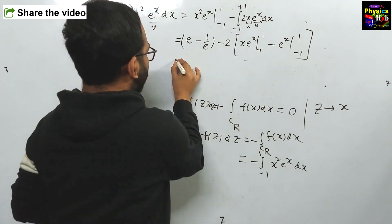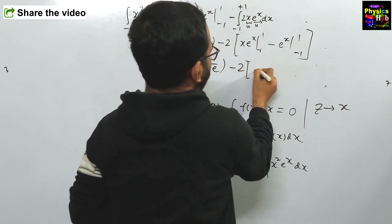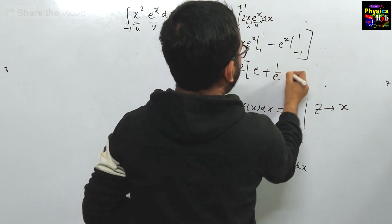You can directly write e^x running from -1 to 1. This will become e minus 1 upon e minus 2 into e and minus plus 1 upon e.